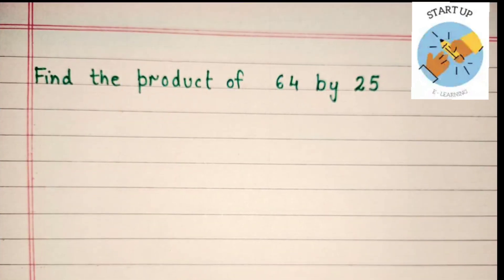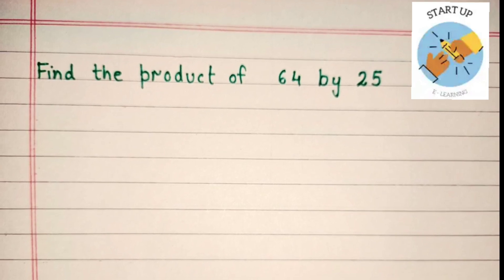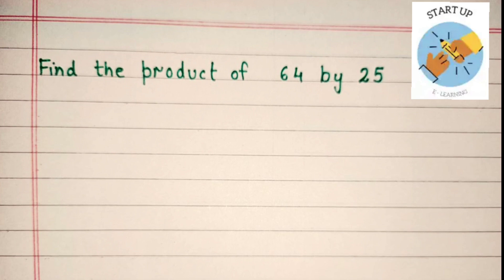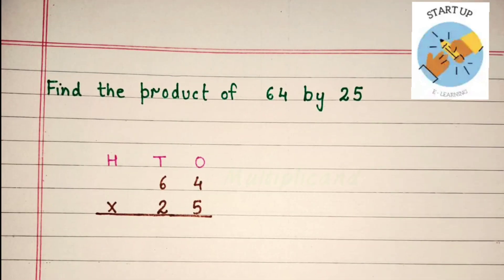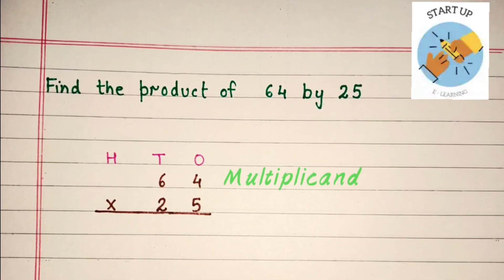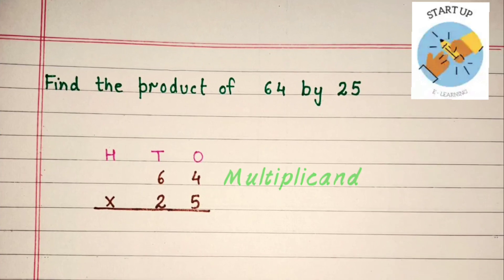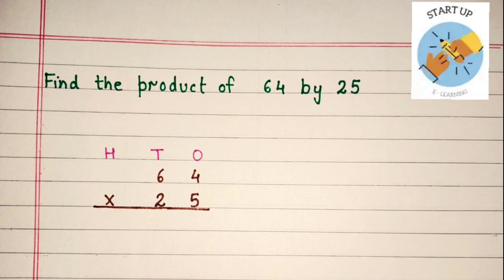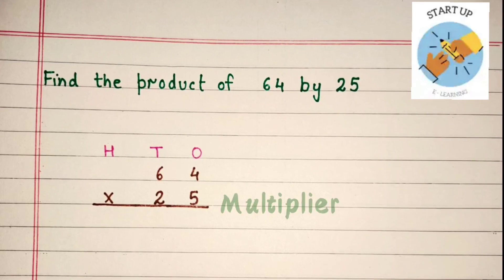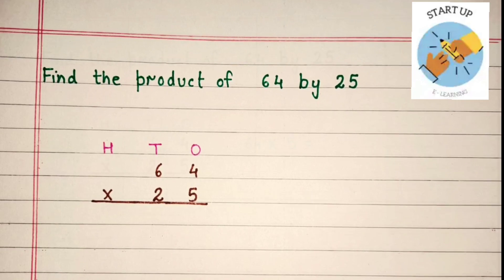To understand this concept in a better way, let's solve one more sum of multiplication. Find the product of 64 by 25. We need to arrange this first according to their places. 4 will be written under 1's and 6 will be written under 10's, and it is the multiplicand here. 5 will be written under 1's and 2 will be written under 10's, and 25 is the multiplier here.